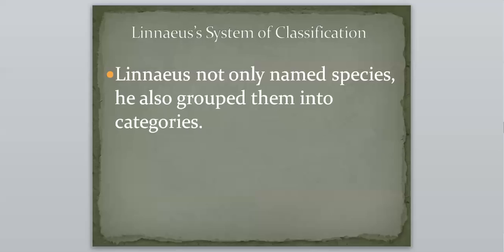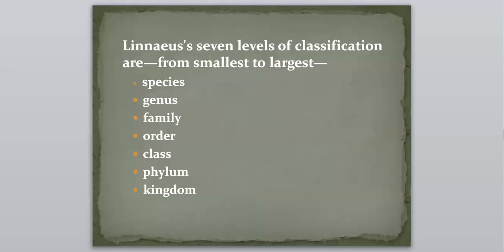So moving on, Linnaeus did not only name species, he also grouped them into categories. We discussed these categories in class, and here they are again. So we are going to start this time from smallest to largest: the species, then genus, then family, then order, then class, then phylum, then kingdom. So that is how we're going to group our organisms.